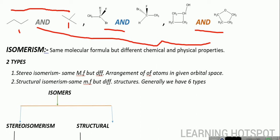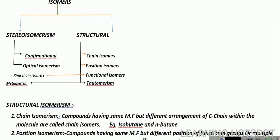They are of two types: Stereoisomerism and Structural Isomerism. In Stereoisomerism, the arrangement of atoms is different in orbital space. And in the same way, there is a different arrangement of atoms in orbital space. Stereoisomerism is of two types: conformational and optical isomerism. We will discuss later what conformational and optical isomerisms are.